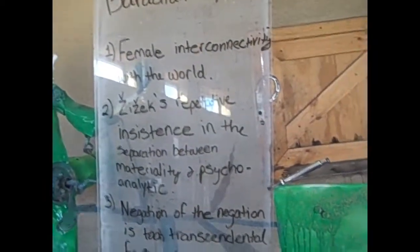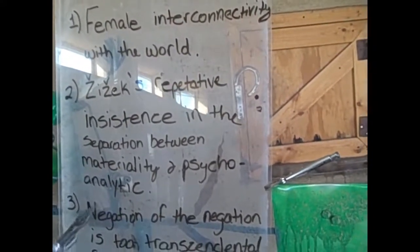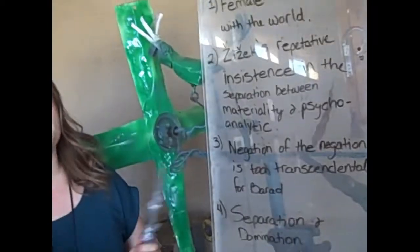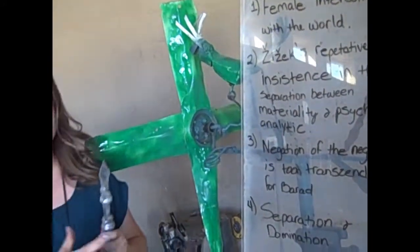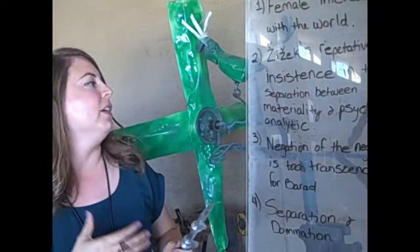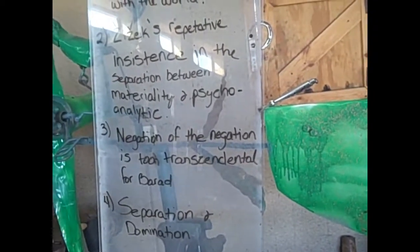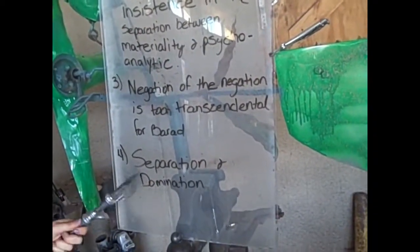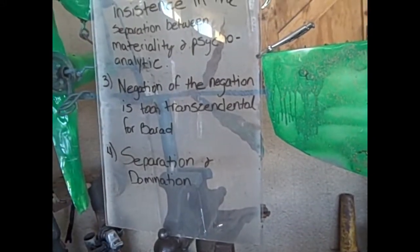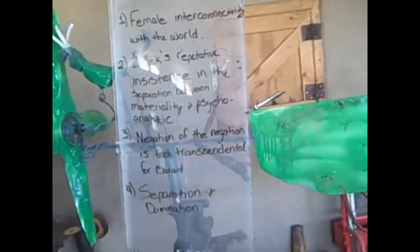Number two is that Zizek's repetitive insistence on the separation between materiality and the psychoanalytic might be comparing pears and apples — materiality is something you can actually measure and is constant, whereas the psychoanalytic depends on person to person. Number three is that the negation of the negation is too transcendental for Barad. Number four is the constant separation and domination of materiality, the psychoanalytic, and language. Thank you.